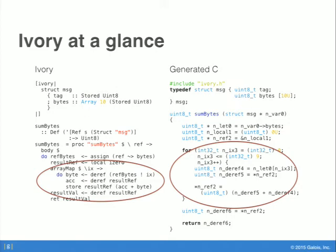'arrayMap' probably looks a little funny because it only takes a single argument — a function that gives you an index. The reason for this is that arrayMap calls this function for each index in the array. Over on the C side, what you end up with is just a for loop that increments through all of those indexes and, just as in the Ivory on the left-hand side, sums the element with the accumulator and continues.